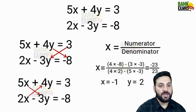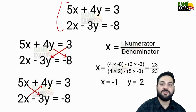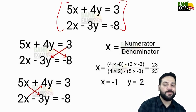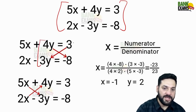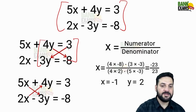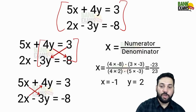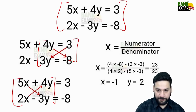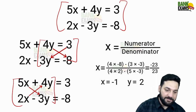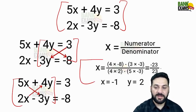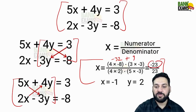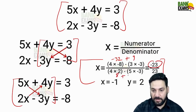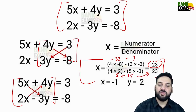Here is a simple example of a linear equation: 5x + 4y = 3 and 2x - 3y = -8. To solve this, take the coefficient of y — multiply 4 by -8, then subtract -3 multiplied by -3 for the numerator. For the denominator, multiply 4 by 2 and subtract 5 multiplied by -3. This gives us -32 + 9 = -23 in the numerator, and 8 + 15 = 23 in the denominator, so the value of x is -1.